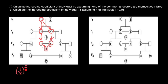So our calculation would be one-half to the power of five — five being the number of nodes. The one-half represents that each individual gets 50% of their genetic information from one parent and 50% from the other parent.